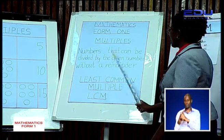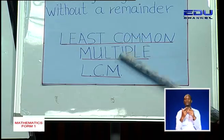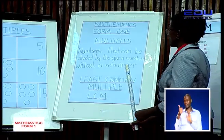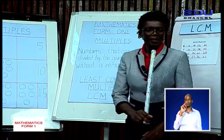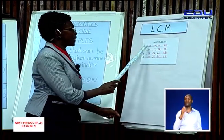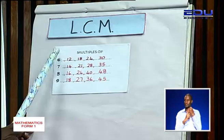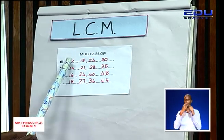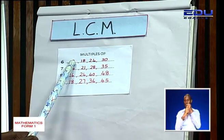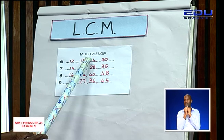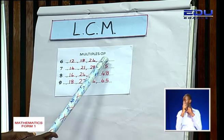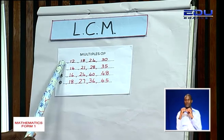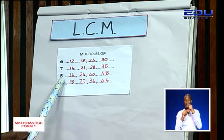Now, before we look at how we calculate the least common multiple, we can look at other examples of multiples. I have 6 here. The multiples of 6 are 12, 18, 24, and 30. All these numbers will divide 6 without a remainder.